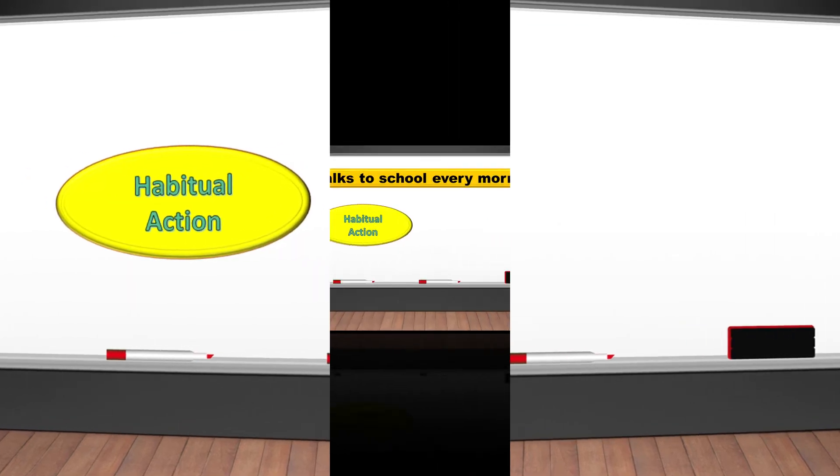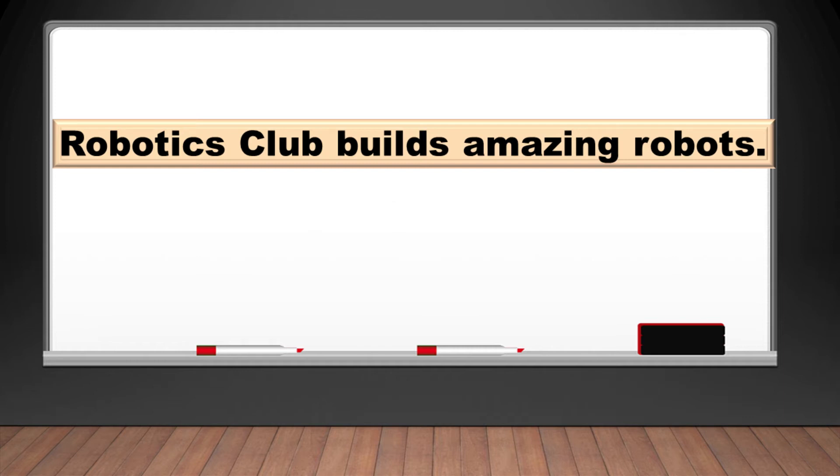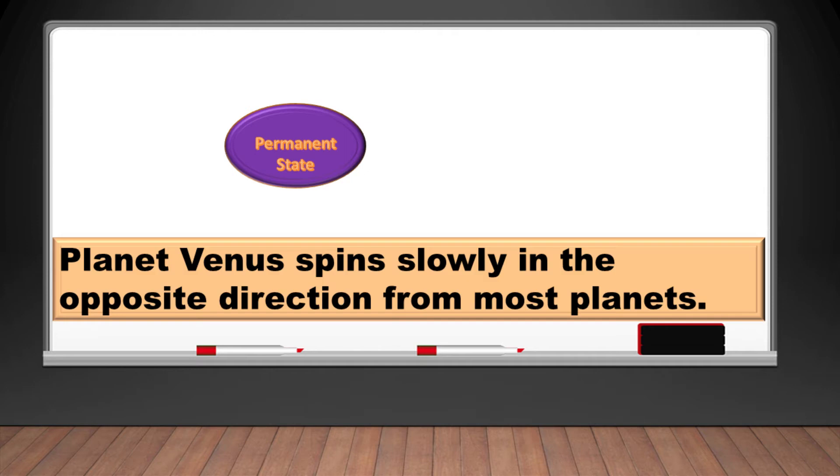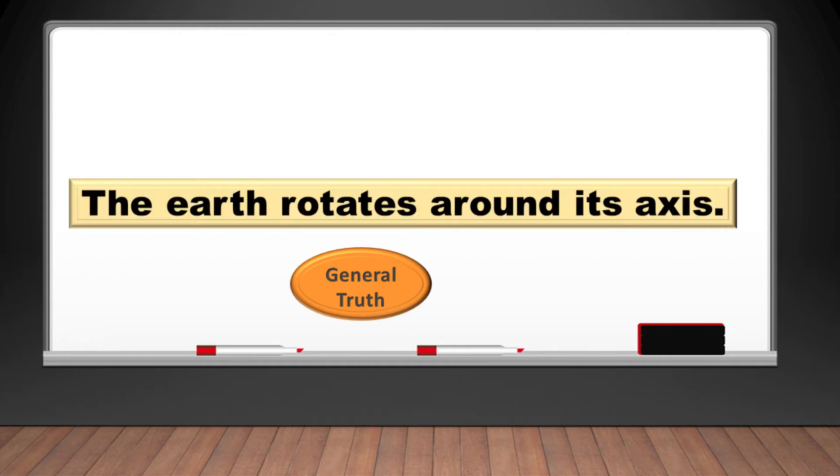Habitual action is used in this sentence: He walks to school every morning. How often does the boy walk to school? Yes, you're correct, every morning. Every morning is a time marker that denotes a habitual action. Robotics club builds amazing robots - building amazing robots is a habit of the robotics club. The permanent state of planet Venus reflects in this sentence: Planet Venus spins slowly in opposite direction from most planets. And this sentence expresses a general truth: The Earth rotates around its axis.